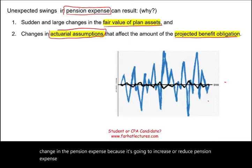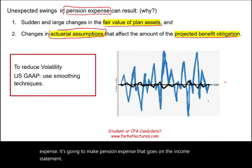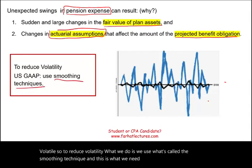Recording those large sudden changes would make pension expense on the income statement volatile. To reduce volatility, we use what's called the smoothing technique, and this is what we need to learn about.